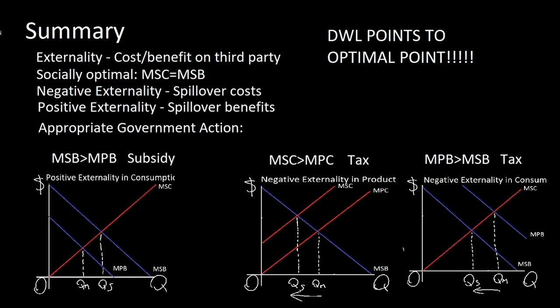So in summary, externality is the cost or benefit on a third party. You must also remember the socially optimal point that we learned from previous units of MSC equals MSB. Negative externality is the result of spillover costs, while positive externality is the result of spillover benefits. And here's some of the appropriate government action for the different scenarios you encounter versus a positive externality in consumption, where we're going to subsidize the firm to keep doing what it's doing.